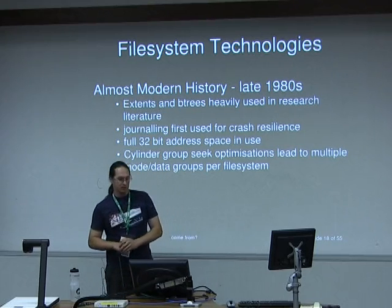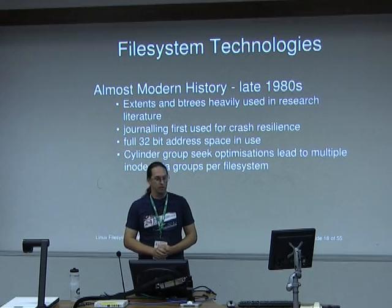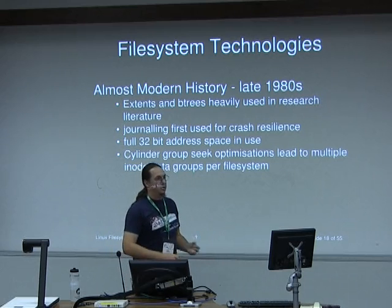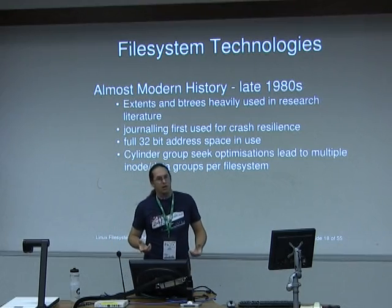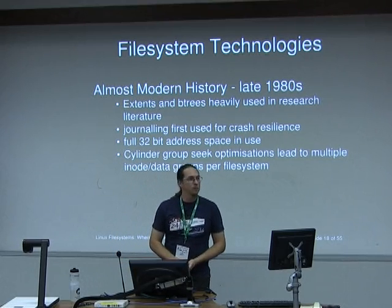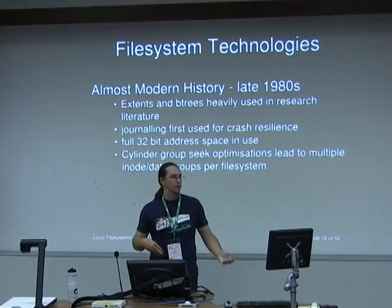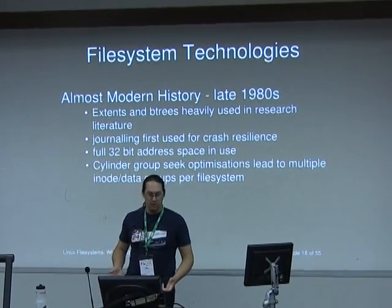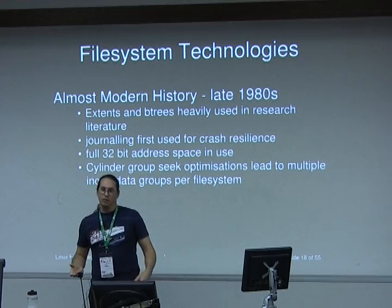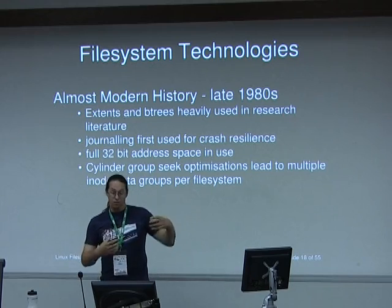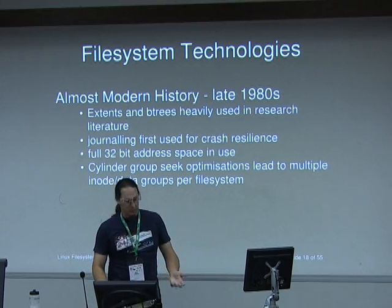In the late 1980s, research papers started talking about optimizing seeks when walking through directory structures and free space maps. They talked about the importance of logarithmic behavior — that's where B-trees came from. Extents and run-length encoding meant you didn't need a bit for every free block. File systems were getting large enough that running file system checkers on every mount was problematic, so journaling was invented. File systems were reaching the full 32-bit address space — 4GB to 8GB — and cylinder group optimizations appeared, placing inode tables and block bitmaps per cylinder group to avoid seeks between metadata updates.